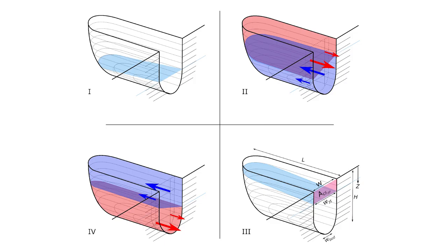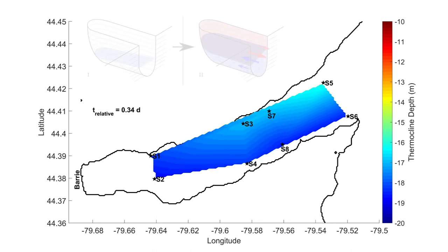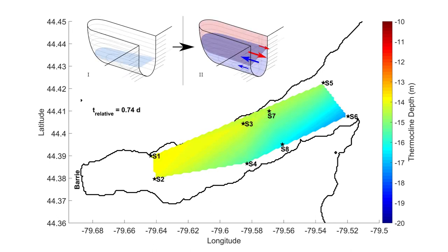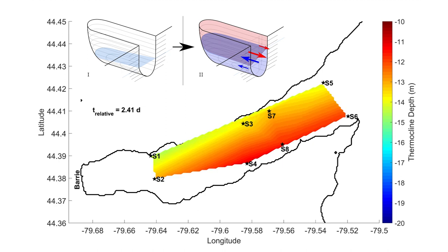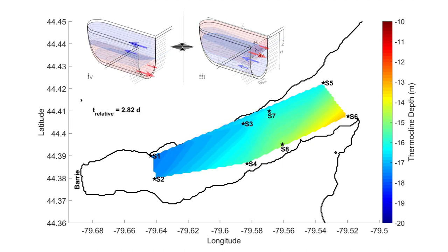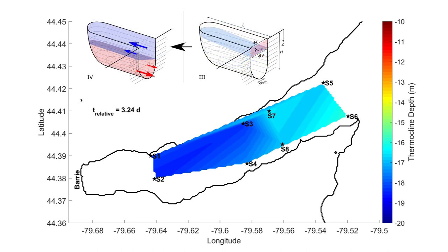In large deep embayments, these thermocline oscillations can act as bellows, pumping water into and out of the embayment. As the thermocline rises, water above the thermocline is squeezed out of the embayment while hypolimnionic water is drawn in below, and vice versa as the thermocline sinks.